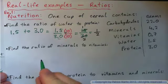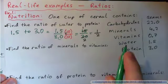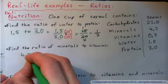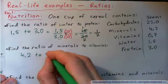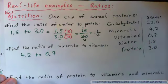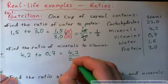So did you try it? 3 seconds, I'm going to do it now. 3, 2, 1. Okay, minerals is 4.2 grams to vitamins which is 0.7. So we write that as a fraction, 4.2 over 0.7.